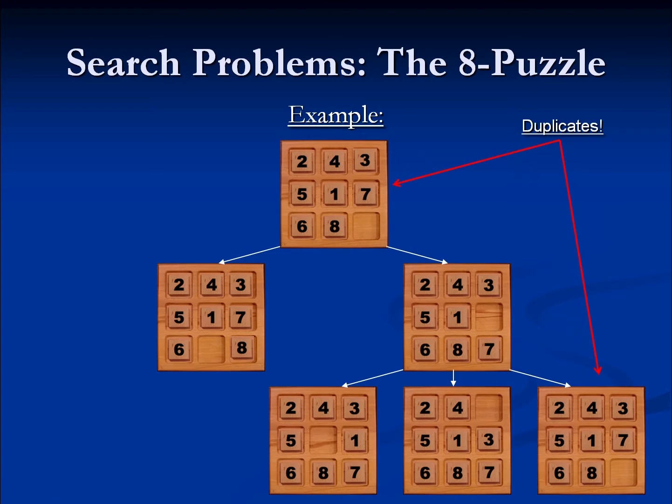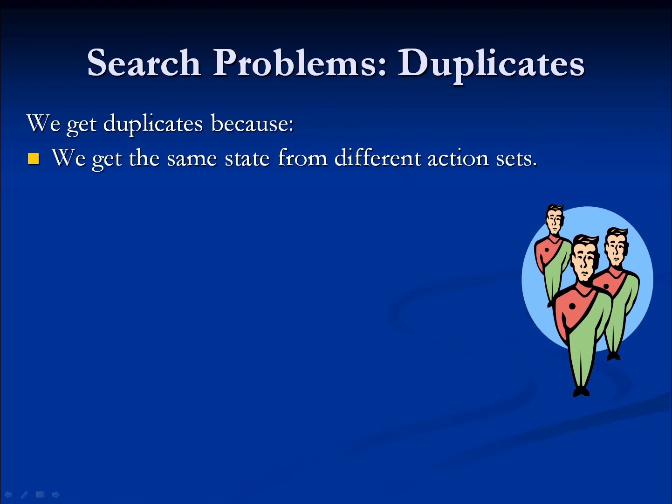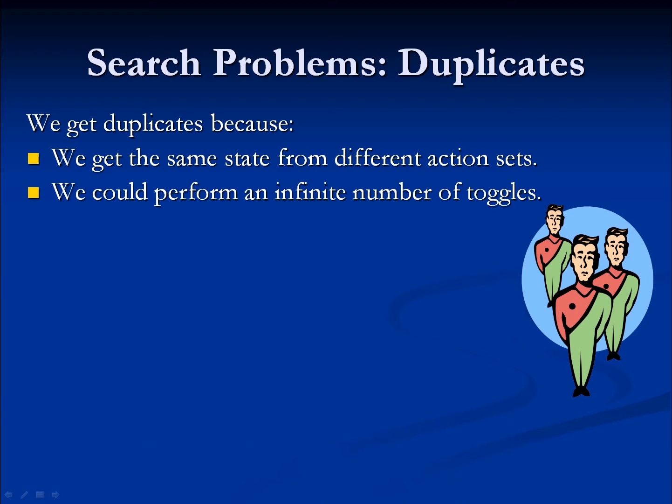Now the toggle is not the only way we can get duplicates. We can also get duplicates by taking totally different sets of actions, even if we start from the same point. For example, let's say that we all decided to go to the arcade. We all might start in the classroom. I might go to my office and do some work. You might go home and do some homework or play some games. And then we might meet at the arcade afterwards — we took totally different paths.